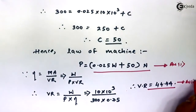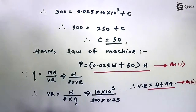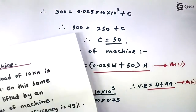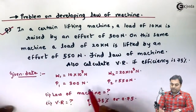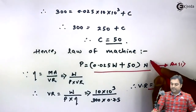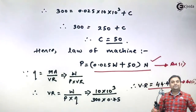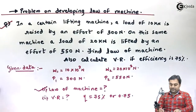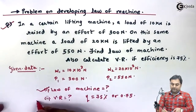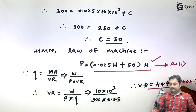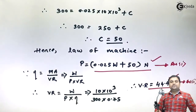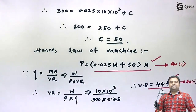To summarize, in this problem we developed the law of machine as P = 0.025W + 50 N, and calculated the velocity ratio as VR = 44.44. With this, the problem is completed. Thank you.